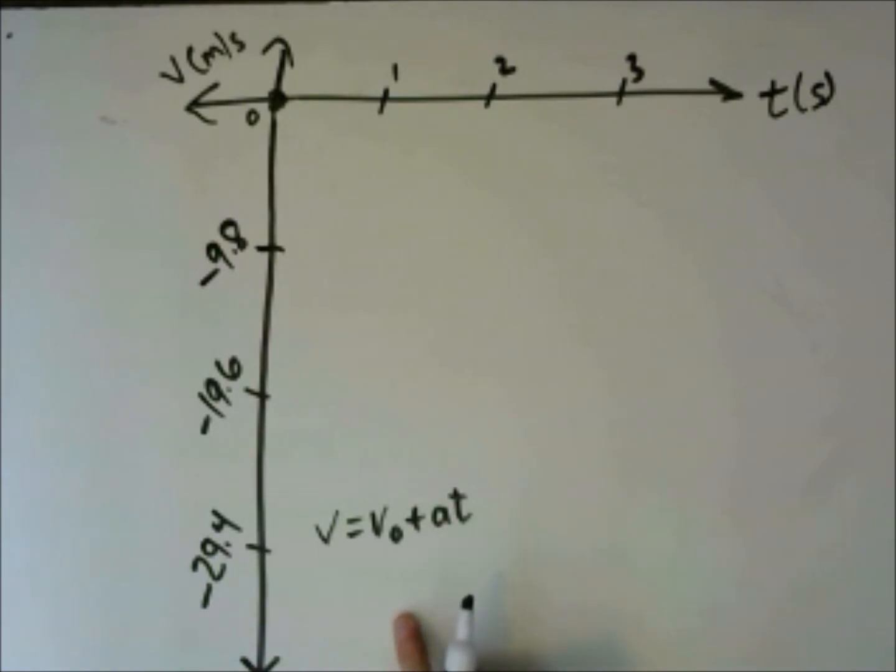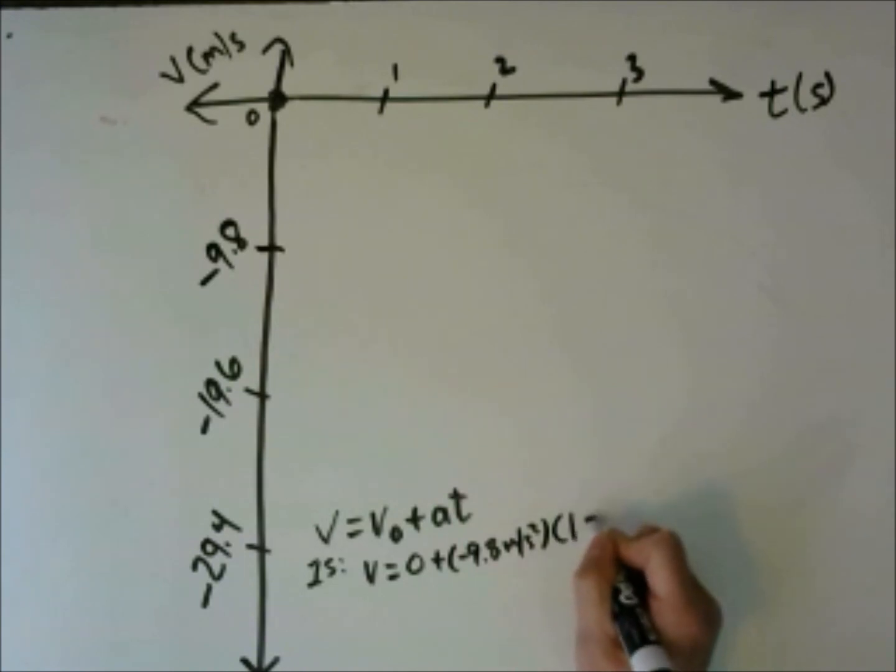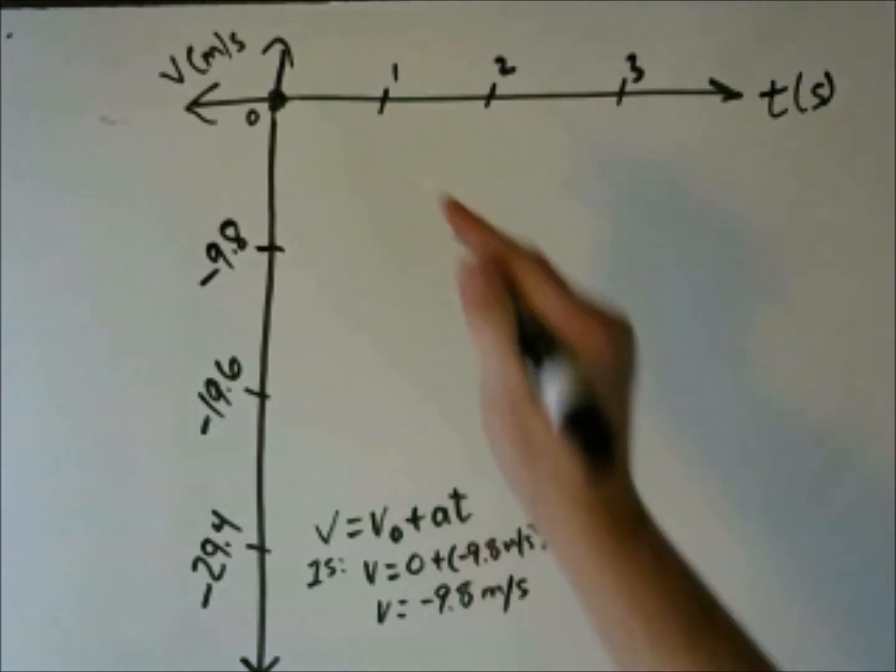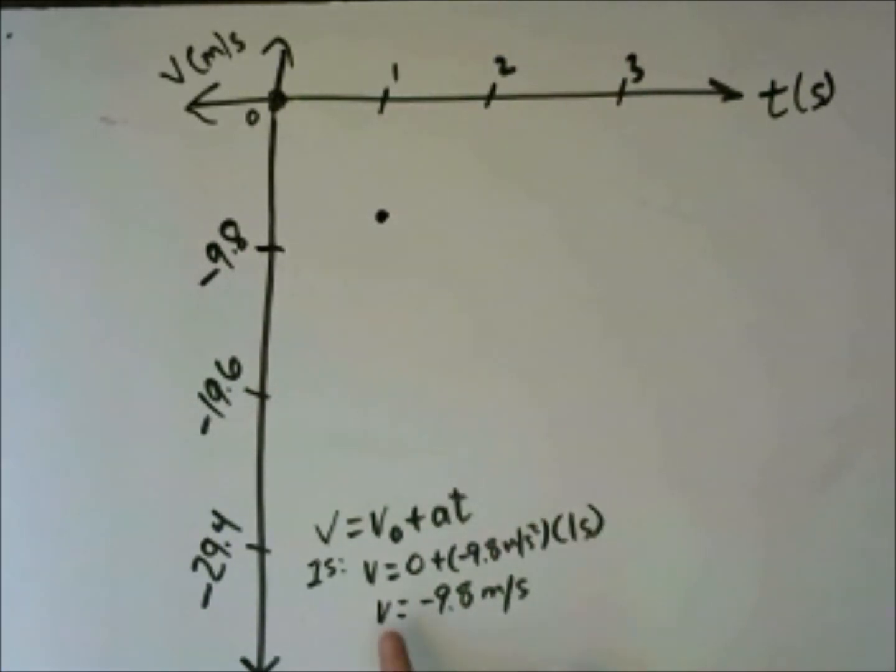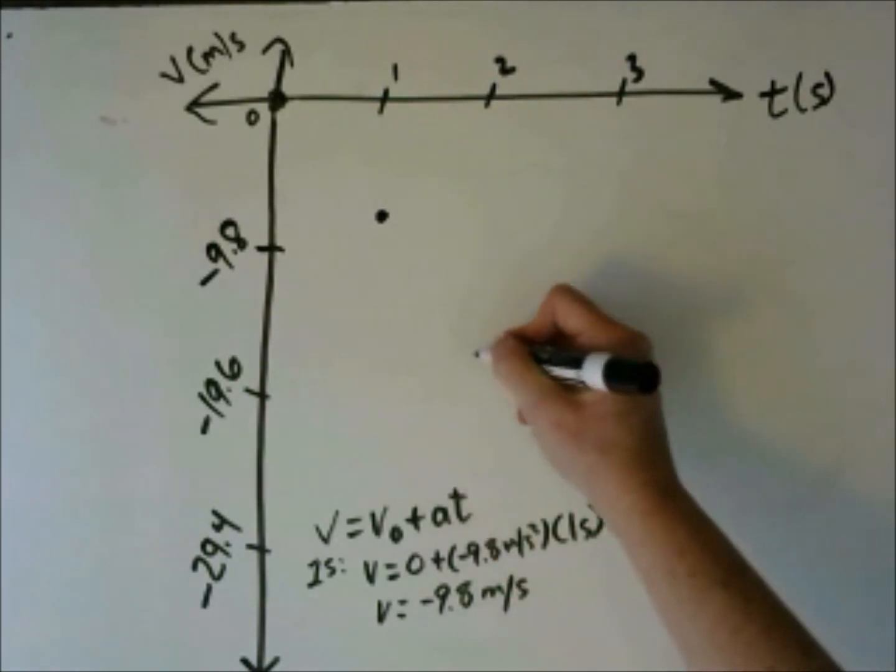We're going to use this kinematics equation to see what our velocity is at different times. Let's consider it at 1 second. We'll get a velocity of 0 plus negative 9.8 times 1 second. A velocity of negative 9.8 after 1 second. If you continue to plug in different times, you'll get velocities that decrease at a constant rate.